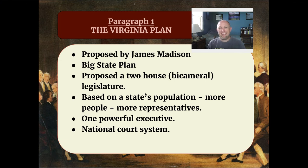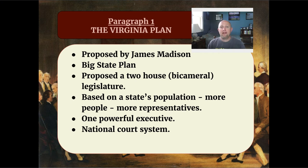The Virginia Plan proposed a two-house legislature, also known as a bicameral legislature — that's a big fancy word meaning two houses. He wanted that legislature to be based on a state's population. In other words, if your state has more citizens, then you should have more power in the legislative branch of government and should therefore have more representatives than states that have smaller populations.